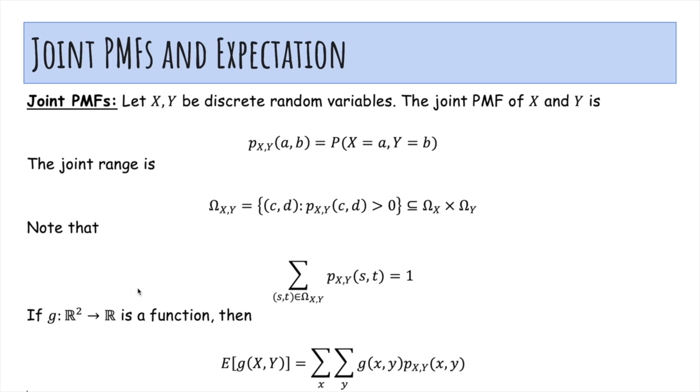And finally, if G is a function, then the expected value of G(X,Y) is the double sum over x and y of G(x,y) times the probability of that value.